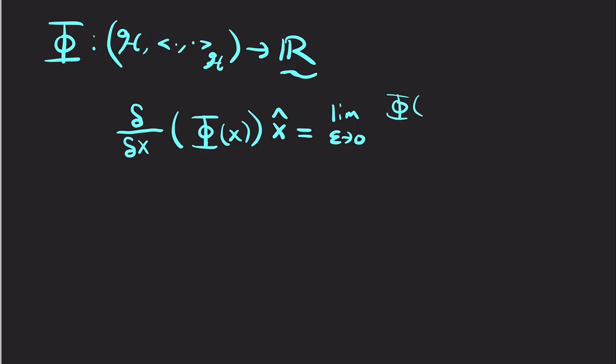And this is φ of x plus ε x-hat, so that's my perturbed, minus φ of x, take the absolute value over ε ||x-hat||, where this is the H norm. And so, this will be the Gâteaux derivative.